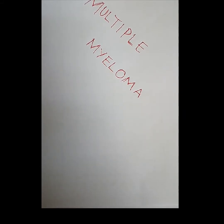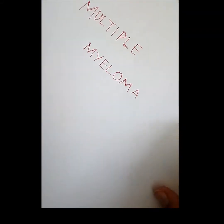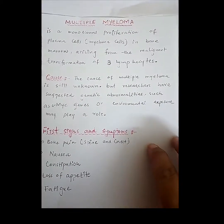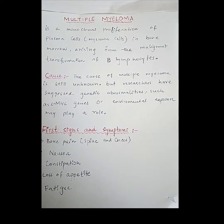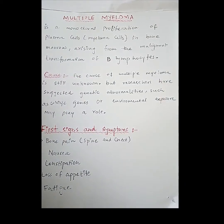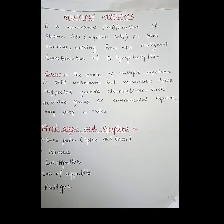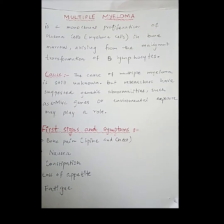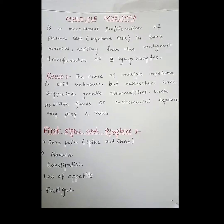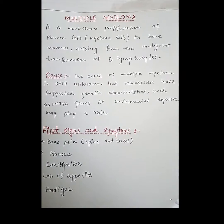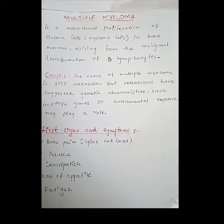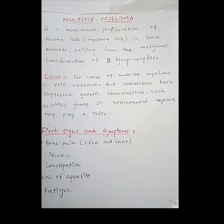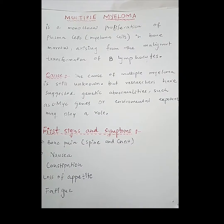We will discuss multiple myeloma. Multiple myeloma is a monoclonal proliferation of plasma cells, called myeloma cells, in bone marrow arising from the malignant transformation of B lymphocytes. It is a type of cancer in which there is abnormal and increased production of plasma cells in the bone marrow.